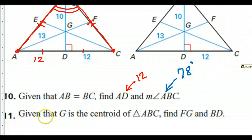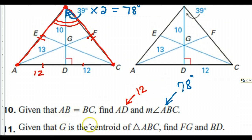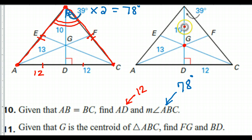Someone asked me to do number 11. I copied the picture over again because this had a lot of marks on it. G is the centroid. The key property of a centroid is that it divides the median into three equal parts. So if this part right here is ten, I can split it in half and have three equal parts — that gives me five, five, and five.